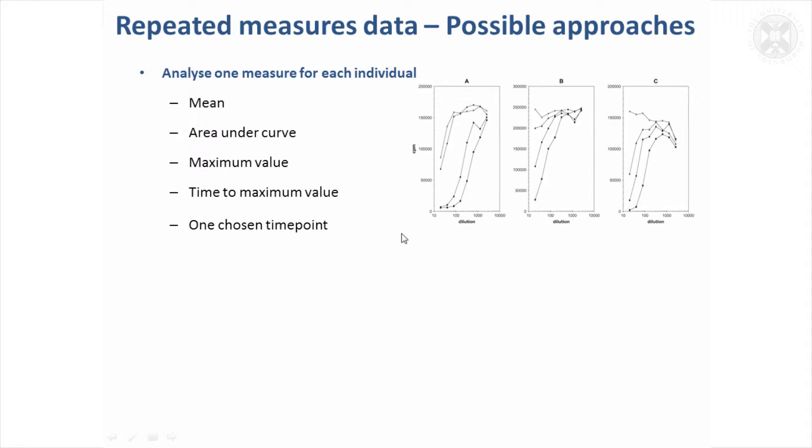First, if we think about simple ways you might analyze that, you might say I'll try and get one measurement per individual. For each of these individual curves for each of the three different treatments, you might take the mean values across the curve, or the area under the curve which would be equivalent, or the maximum value, the time to reach the maximum value, or just say that one time point is particularly important. That's one approach but it does omit a lot of the data.